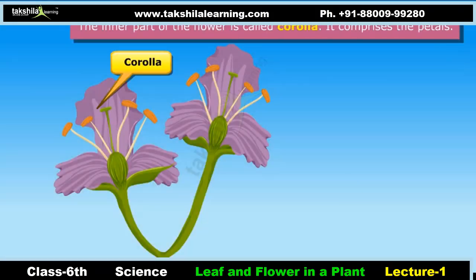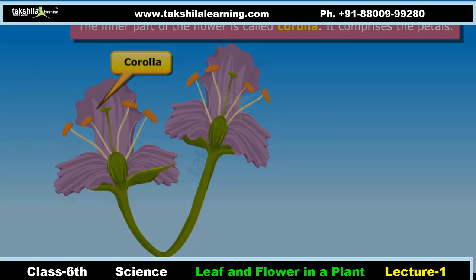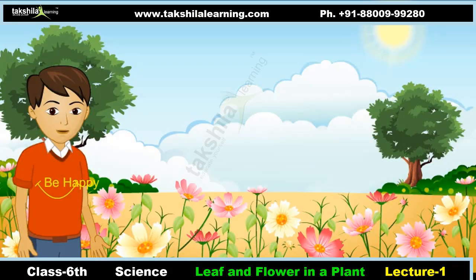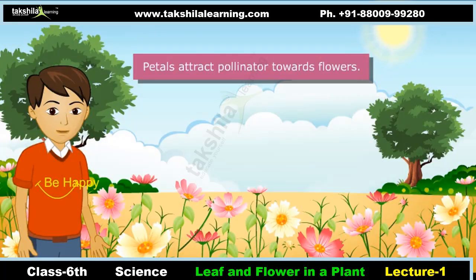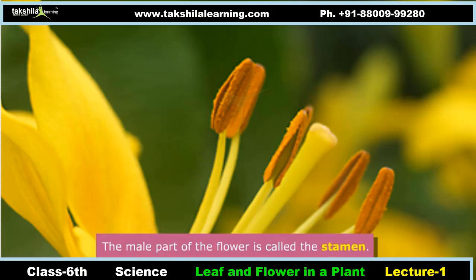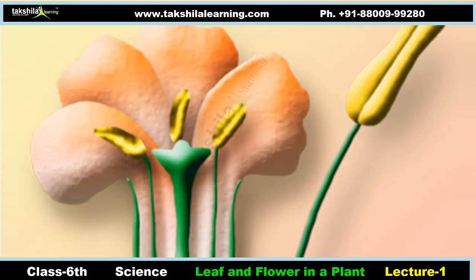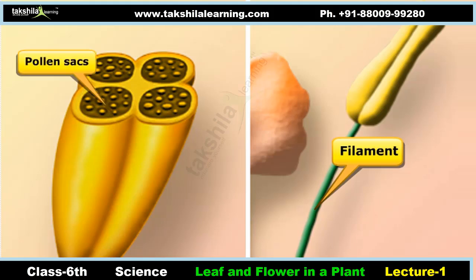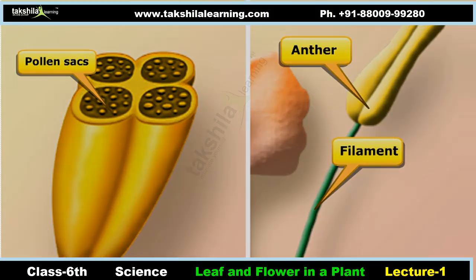The inner part of the flower is called the corolla; it comprises the petals. Different flowers have petals of different colors. Petals attract pollinators towards the flower. The male part of the flower comprises one or more stamens. Each stamen is a stalked structure; the stalk is called the filament.